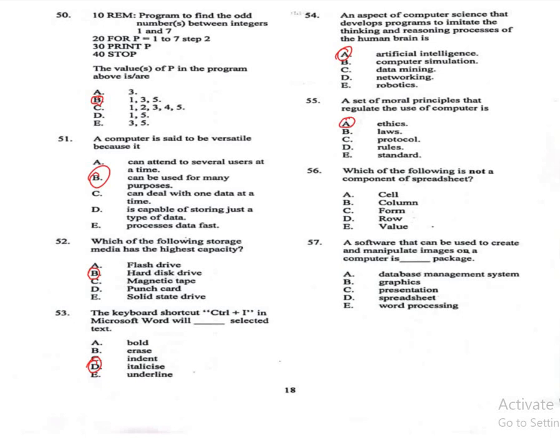Question 56: Which of the following is not a component of spreadsheets? A: cell, B: column, C: form, D: row, E: value. The correct answer is C, form. Question 57: A software that can be used to create and manipulate images on a computer is a — package. A: database management system, B: graphics, C: presentation, D: spreadsheet, E: word processing. The correct answer is B, graphics.